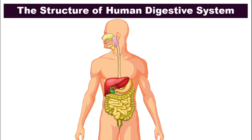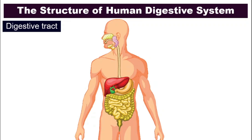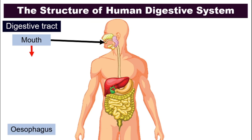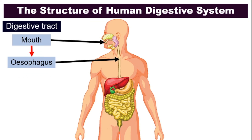Now let's look at the structure of our digestive system. We have something called the digestive tract — it is like the pathway of food from the minute it enters your body to when it exits. That whole path is called the digestive tract. It starts from your mouth, continues to the esophagus, which is a tube that connects your mouth to your next organ: the stomach.